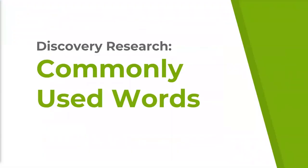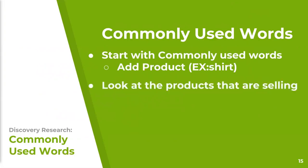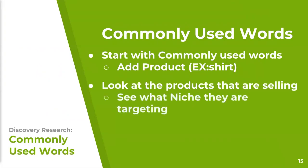Next we show another research method using commonly used words. If you do any searches, you'll start to see a theme where a lot of people selling clothing use very similar keywords. You start with those commonly used keywords, do research to see which words are mostly being used, then add the product keyword to the back. Just like the trend method, we look at the products selling and see what niches the competition is targeting.